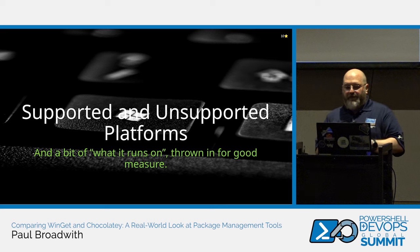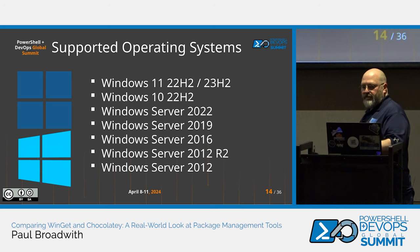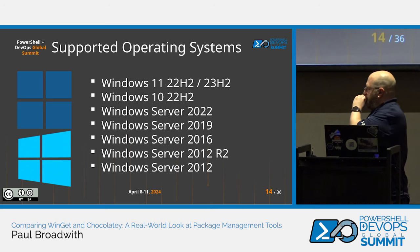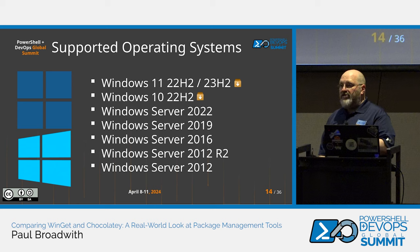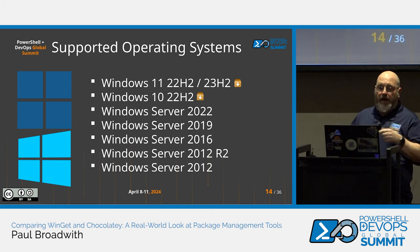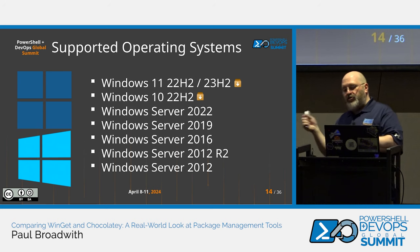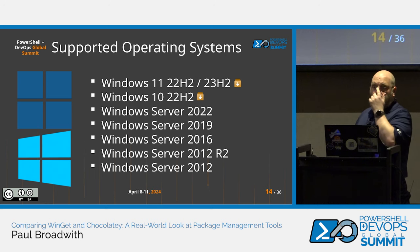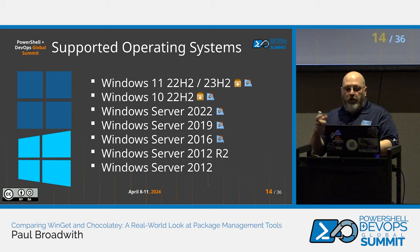Supported and unsupported platforms — what does each tool run on? Looking at Microsoft's current supported client and server operating systems: WinGet only runs on Windows 11 22H2, Windows 11 23H2, and Windows 10 22H2. Windows Server 2022 has experimental support, which we'll touch on next. If you've got any other operating system, WinGet isn't an option for you at all.